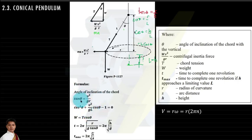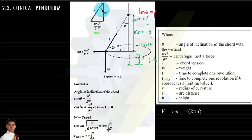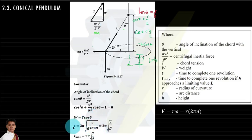Next, theta and tension can be related using cosine: cosine theta = w/T, so weight w = T·cosine theta. The time to complete one revolution is given by: t = 2π·√(r / g·tangent theta).